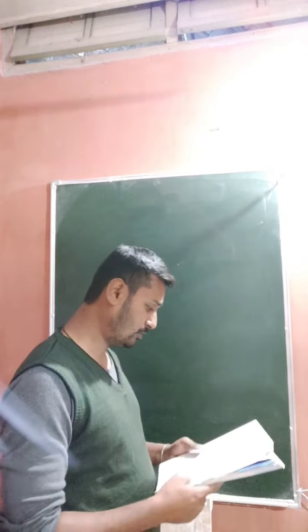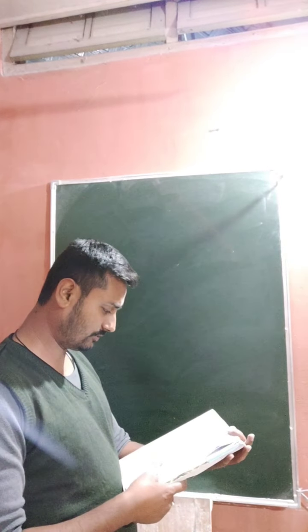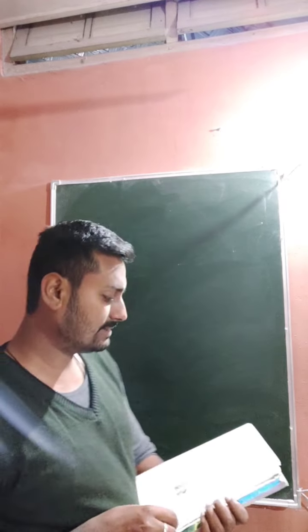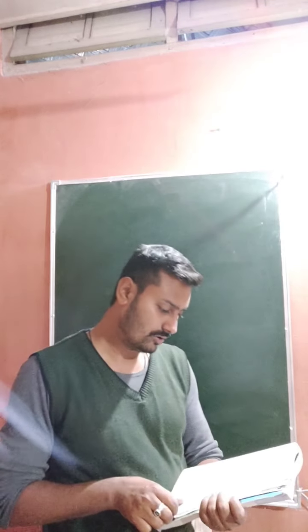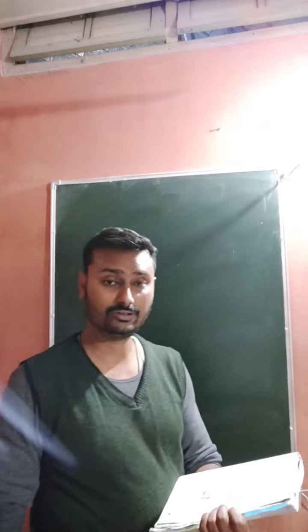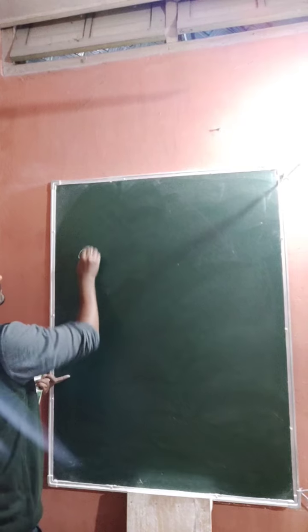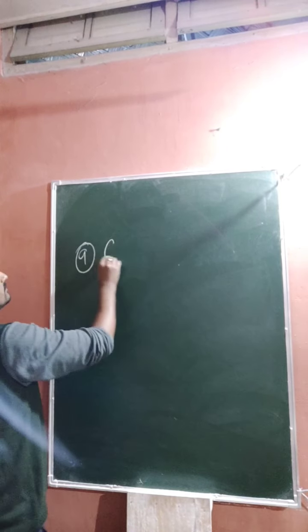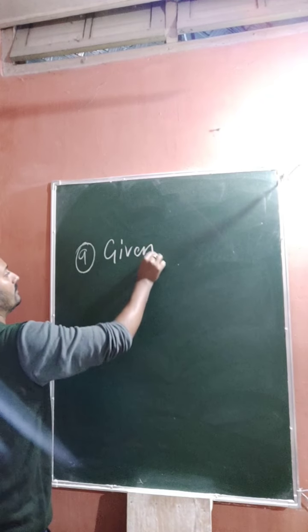Okay, so come to question number nine. It is given that two Doraemon parts are sold at rupees seven thousand each. On one he earns a profit of ten percent and on the other he loses ten percent. Find his total profit or loss percent.